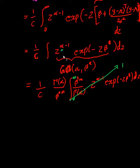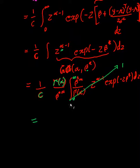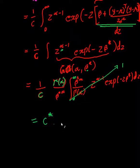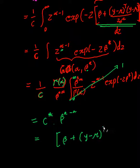All we're left with is: alpha was always a constant, but beta star was not. I'm not going to care about the constant C or gamma of alpha because they're essentially constants. But beta star I will care about because the beta star gives us a new constant times beta star to the minus alpha, which rewriting beta star gives: beta plus (y minus mu) transpose times (y minus mu) divided by two sigma squared, all to the minus alpha.